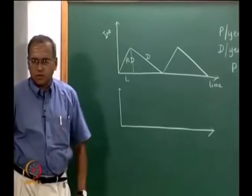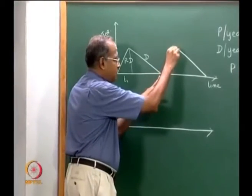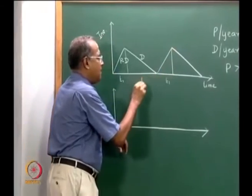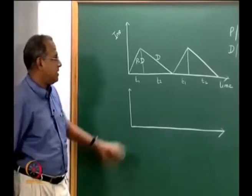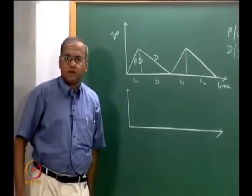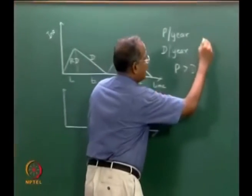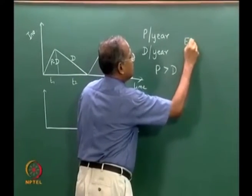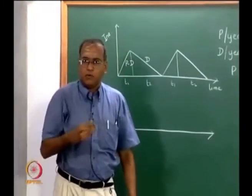Then the cycle starts all over again. Once again, from here, it is again produced for a period t1 and again consumed for a period t2 and so on. We derived the expression for the economic batch quantity which was called EBQ, very similar to EOQ.